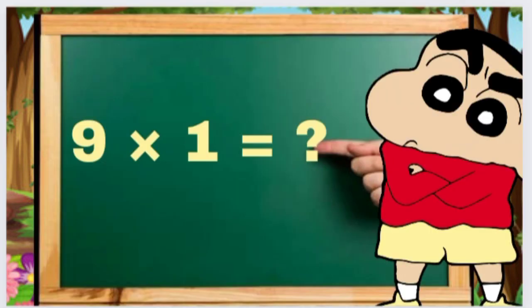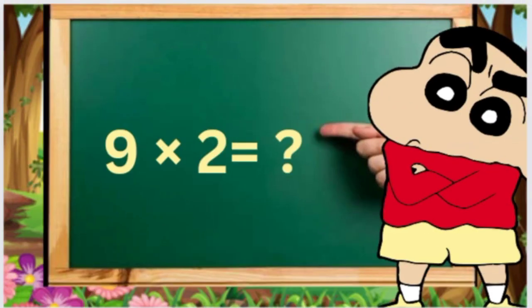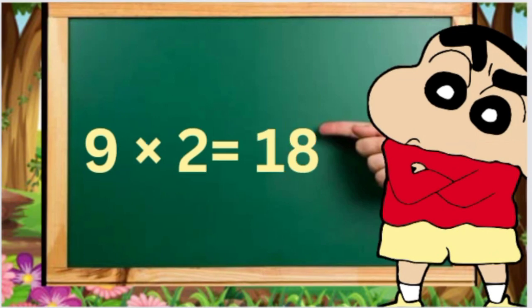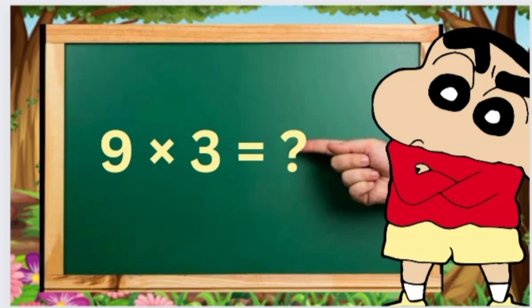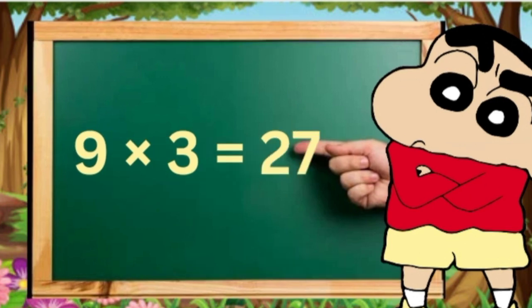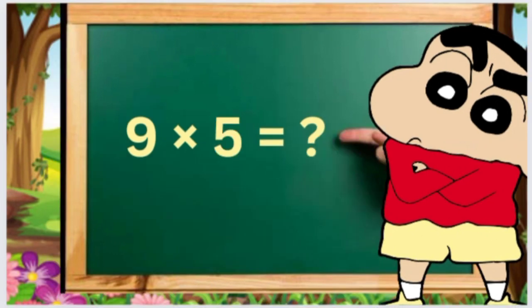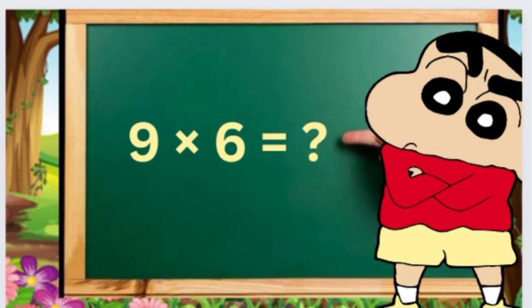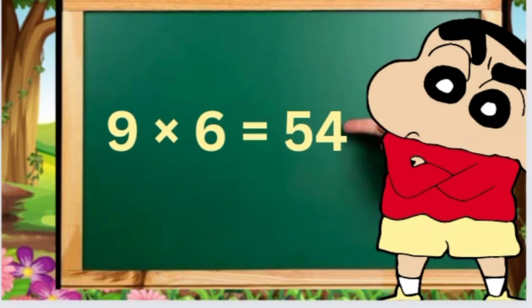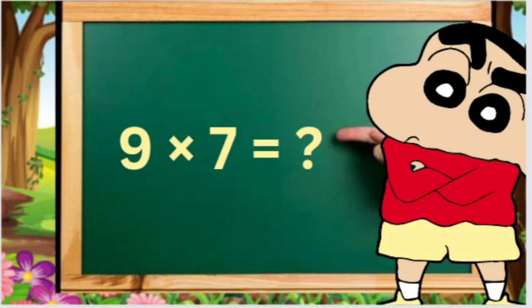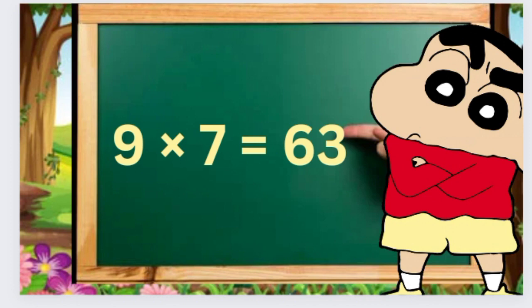Nine ones are nine, nine twos are eighteen, nine threes are twenty-seven, nine fours are thirty-six, nine fives are forty-five, nine sixes are fifty-four, nine sevens are sixty-three.